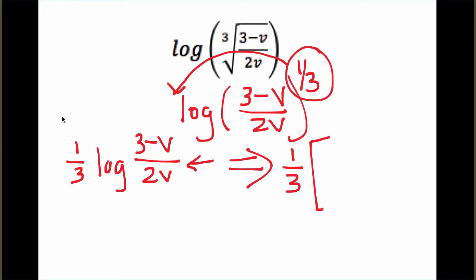So I'll change this expression to 1/3rd and that 1/3rd has to apply to everything. So I'm just going to keep it in parentheses or I'm just going to do brackets here for now. 3 minus v minus the log of 2v. So I just got rid of that division.